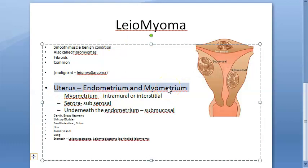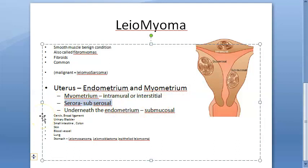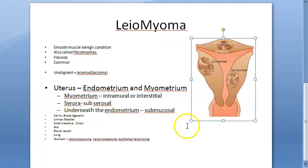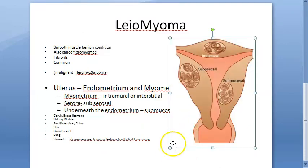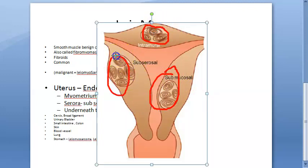Understanding the types: the uterus has endometrium and myometrium. If the fibroid is in the myometrium, it is called intramural or interstitial. If it is underneath the endometrium, it is called submucosal. If it is in the serosa it will be subserosal. So the three types are: submucosal, intramural, and subserosal - as shown in this diagram.